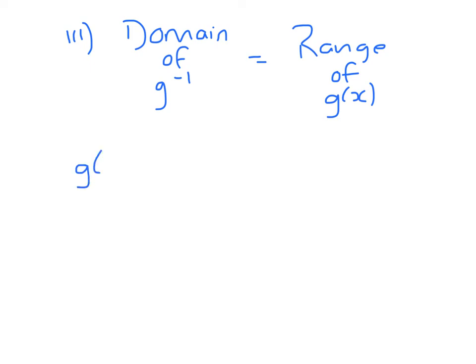To answer part 3 now, what we need to understand is that the domain of the inverse is equal to the range of the function. So we just copy our domain, but instead of x we say that g must be real and g cannot equal 4.